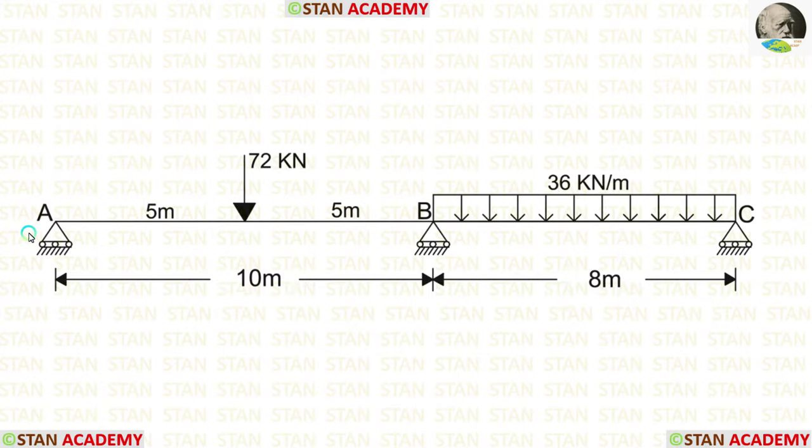There are three supports in this beam: at point A, point B, and point C. All the supports are roller supports.